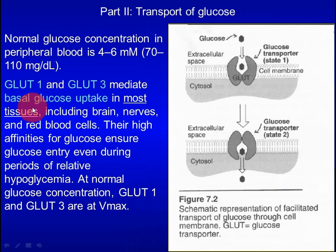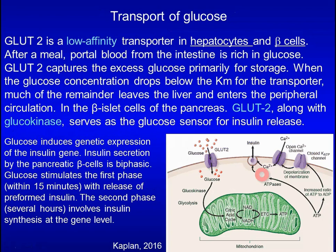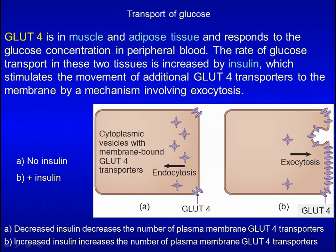GLUT1 and GLUT3 mediate basal glucose uptake in most tissues, including brain, nerves, and red blood cells. Their features are low Km and low Vmax. GLUT2 is more specifically found in hepatocytes and pancreatic beta cells, featuring high Km and high Vmax. In pancreatic beta cells, GLUT2 along with glucokinase serves as a glucose sensor for insulin release.